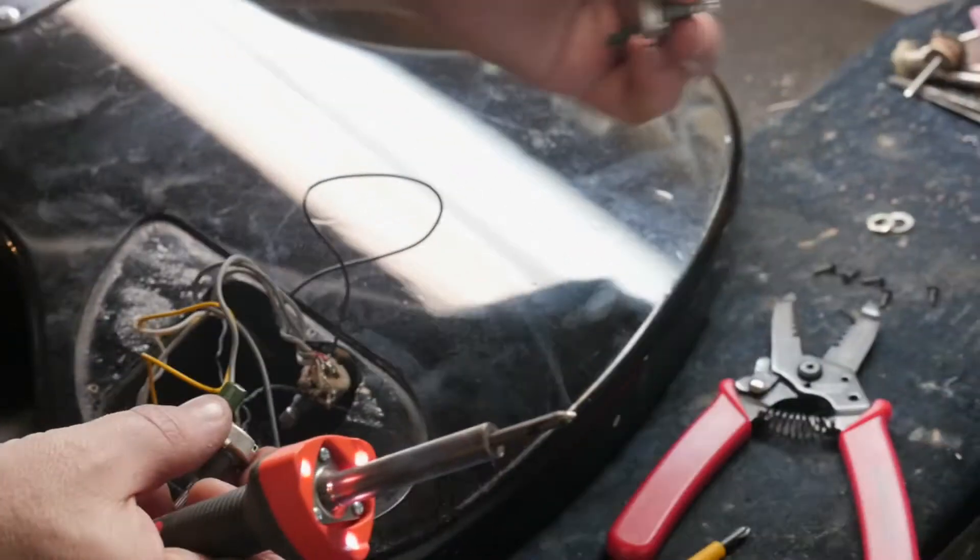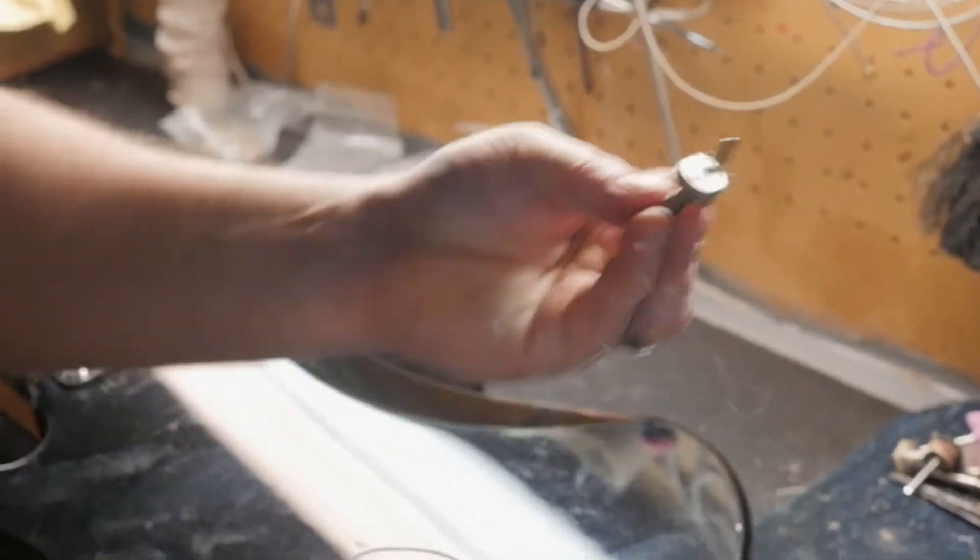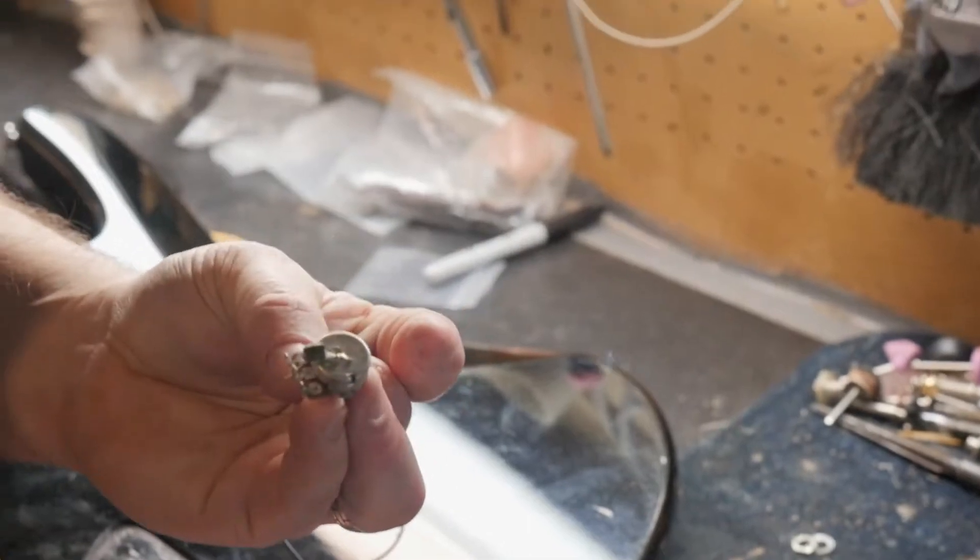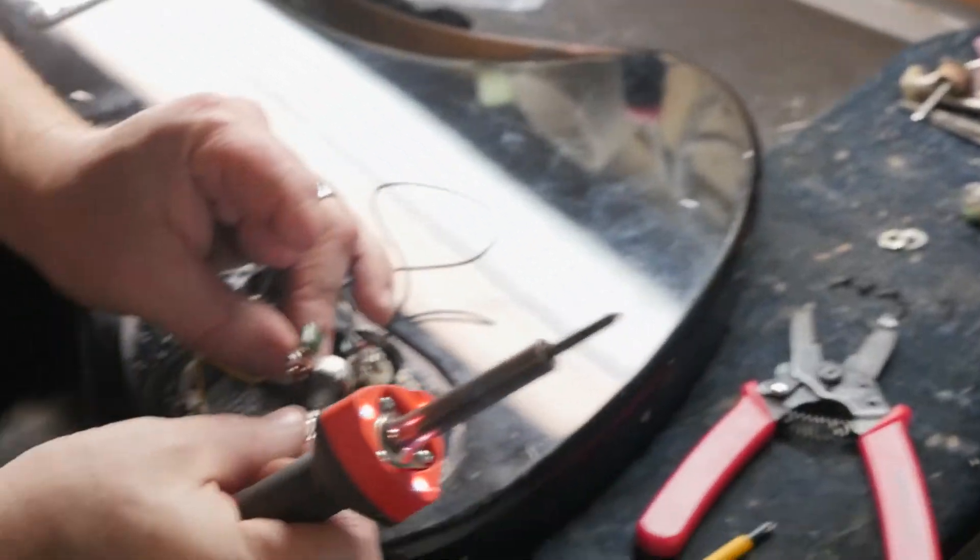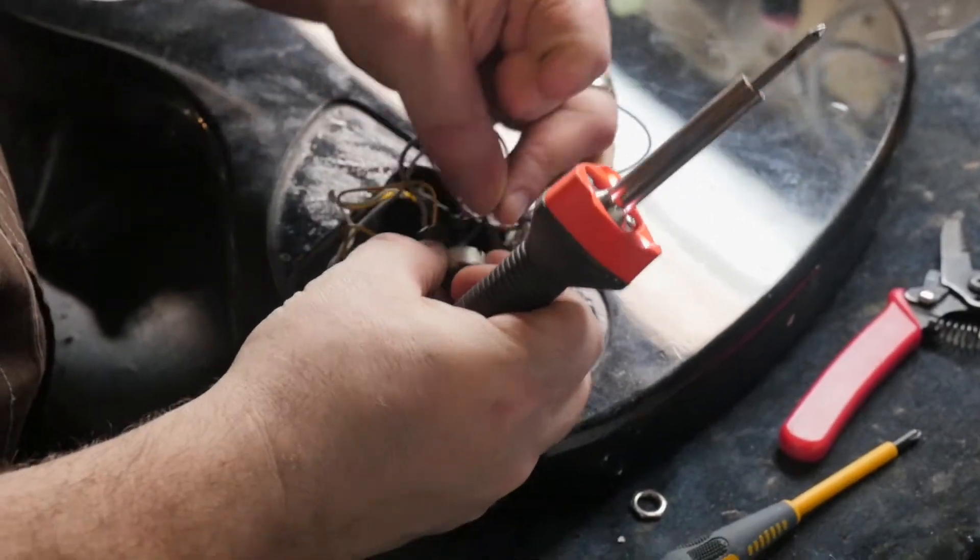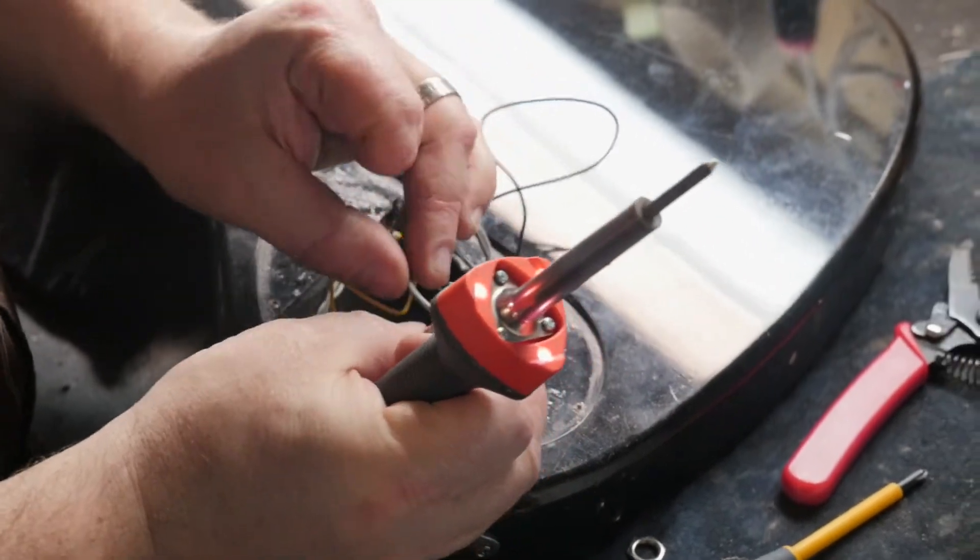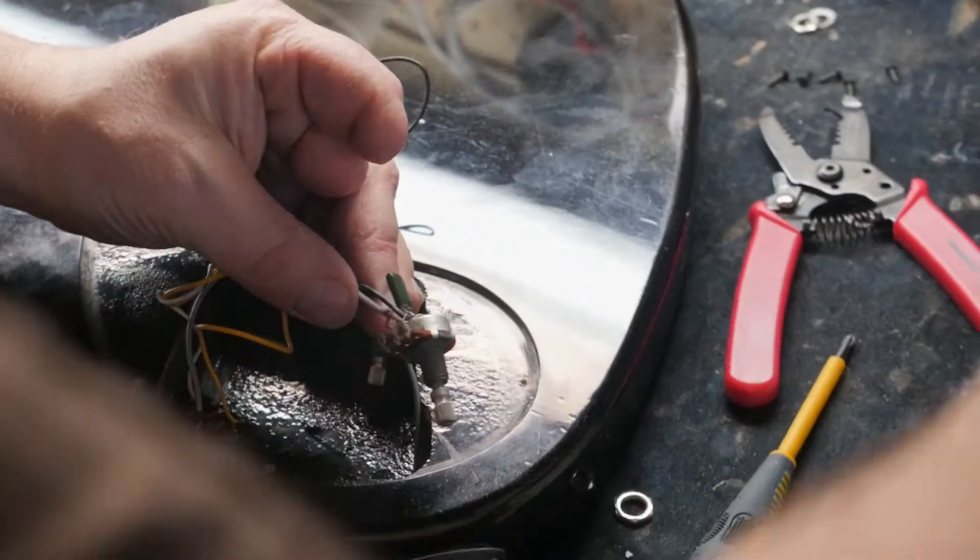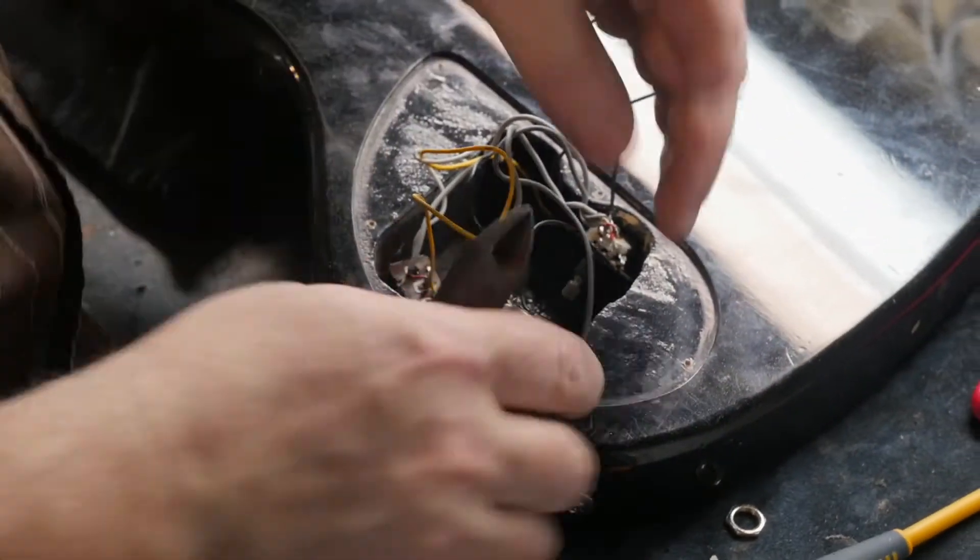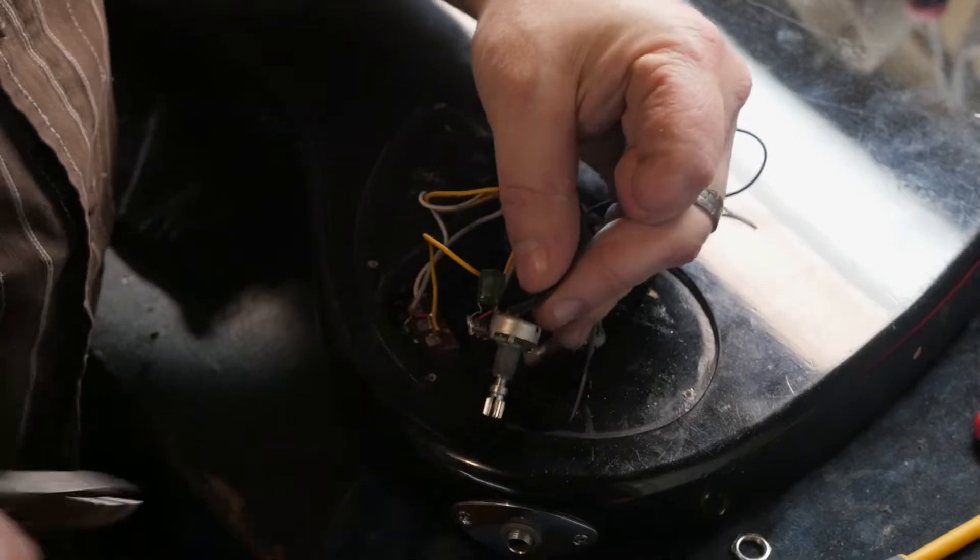We have ready to go a new pot for the tone. I'm just going to remove this one which is completely broken. Normally I would try to desolder some of these wires, but in this case they're pretty bad anyway. I'm just going to cut them and reconnect them all properly.